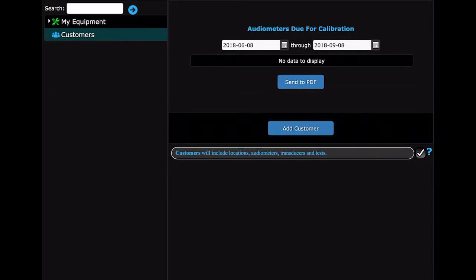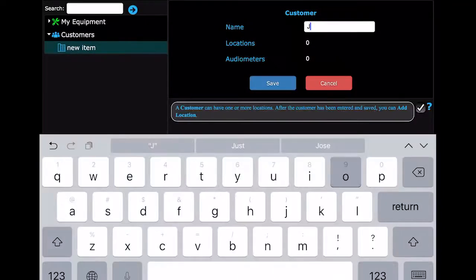First, navigate to Customers in the tree view. Then in the main view, select the Add Customer button. Enter the name of the customer, then select Save.